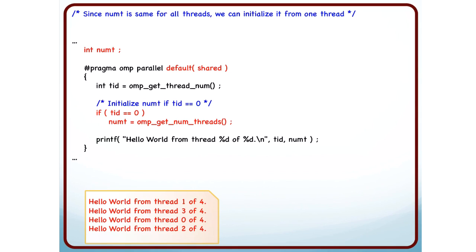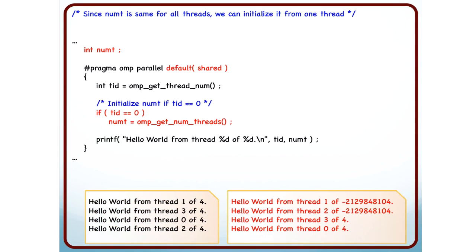So now when I try to run this, seems to run fine. I run it again. I get some garbage. So why did this happen? In this particular case, thread number 1 and thread number 2, they basically went past this instruction and printed hello world even before thread 0 could come and execute this code.